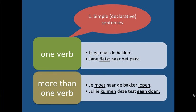We start with the simple declarative sentences. These sentences can either have one verb, or they can have more than one verb. Examples of one verb in simple sentences are 'Ik ga naar de bakker' — I'm going to the bakker — or 'Jane fietst naar het park.' The verbs 'ga' and 'fietst' are the only verbs. You see that there's only one in each of these simple sentences.